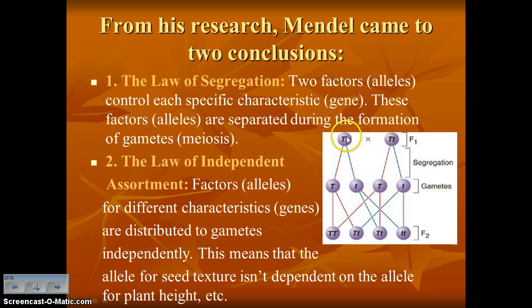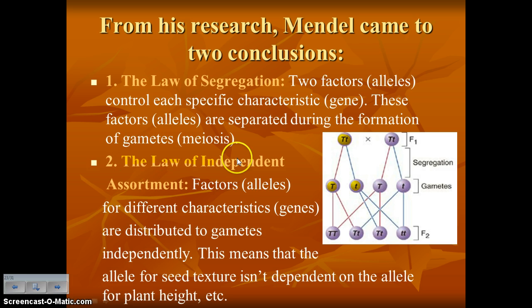Two other conclusions Mendel reached were the law of segregation and the law of independent assortment. The law of segregation says those two alleles get separated during the formation of gametes during meiosis — a diploid cell carrying both a dominant allele (big T, tall) and a recessive allele (little T, short) produces haploid cells carrying one or the other. The law of independent assortment says alleles for different characteristics are distributed to gametes independently — the allele for seed texture isn't dependent on the allele for plant height. Write these definitions under number 7 and label the diagram.